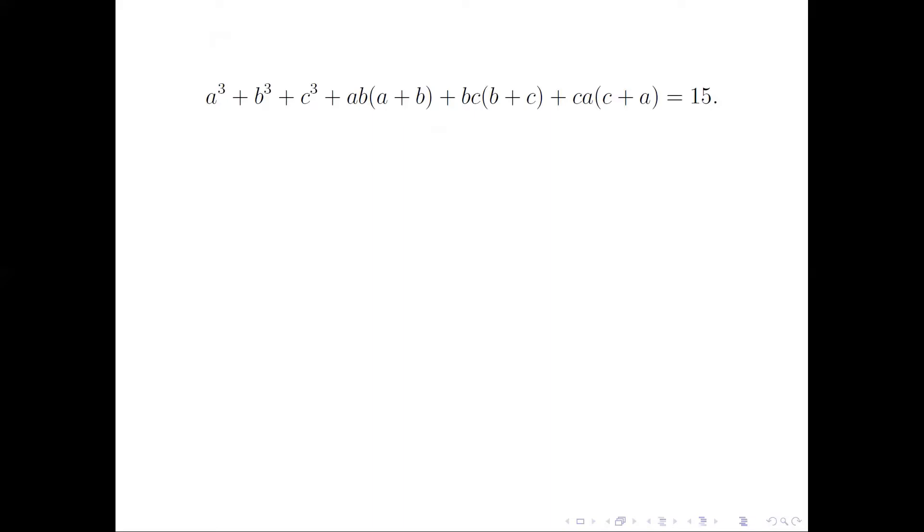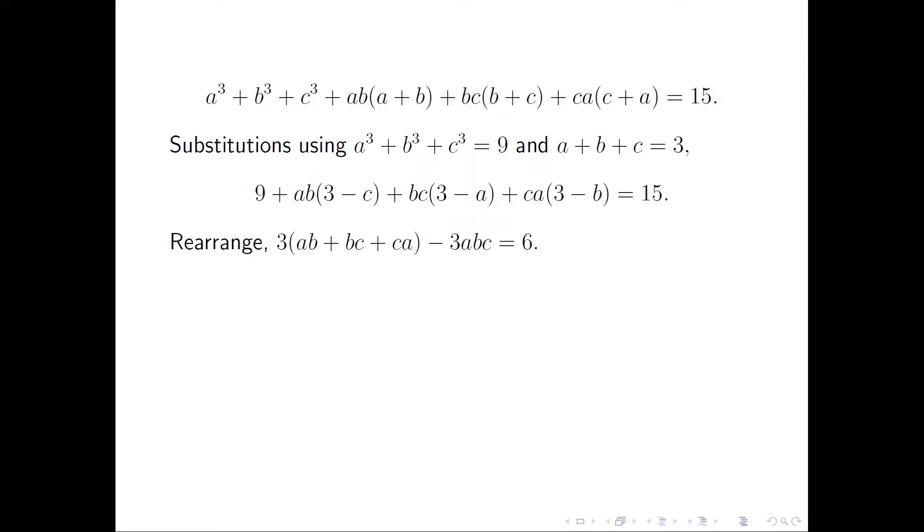This equation can be further simplified by substitution. We know the sum of the first three terms is 9, and A + B + C = 3. So A + B = 3 - C, B + C = 3 - A, and C + A = 3 - B. Cleaning it up, we have 3(AB + BC + CA) - 3ABC = 15 - 9 = 6.